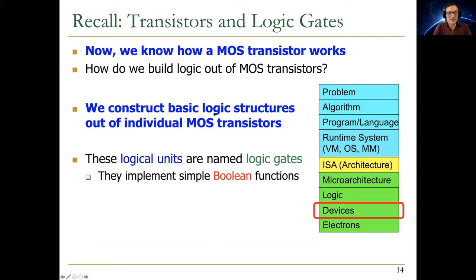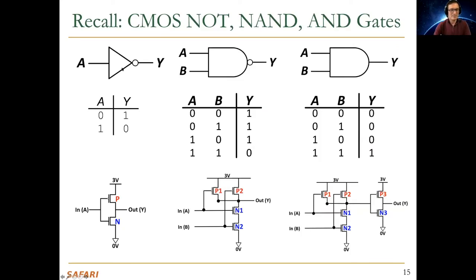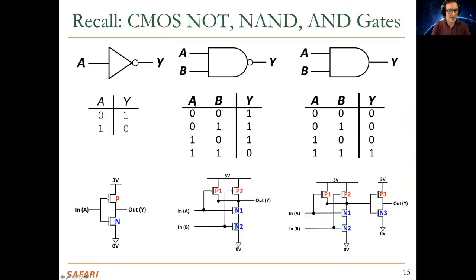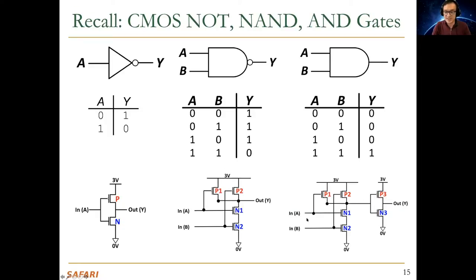We started with a metal oxide semiconductor transistor and built basic logic structures out of individual transistors — we call them logic gates. These are the basic logic gates: NOT, AND, and OR. The truth table represents the logic gate in terms of its inputs and outputs. For every combination of input values you get a result in the output. At the bottom you can see the transistor-level CMOS representations of these gates.